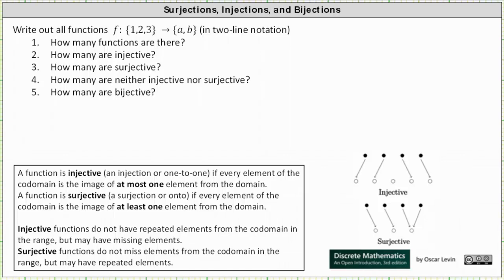We want to write out all the functions f that map the set with elements one, two, and three to the set with elements a and b in two-line notation, where the set with elements one, two, and three is the domain, and the set with elements a and b is the co-domain.